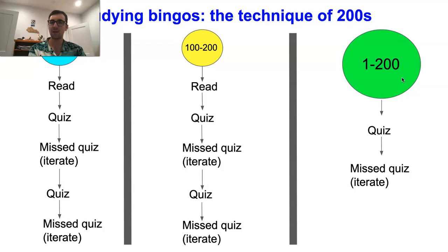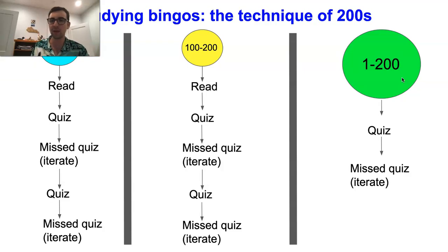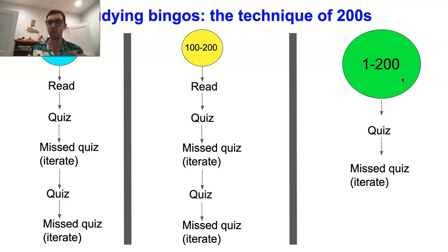If you find that 200 words is too much for you at one sitting, it can be scaled down. If you want to do 100 words at once, just divide everything by two: split into two groups of 50 words, do the same process on each group of 50, and then quiz yourself on all 100 words collectively. The key takeaway is you should be individually quizzing yourself twice on each of the subgroups, and then once you've gone through those, quiz yourself once on the whole group.